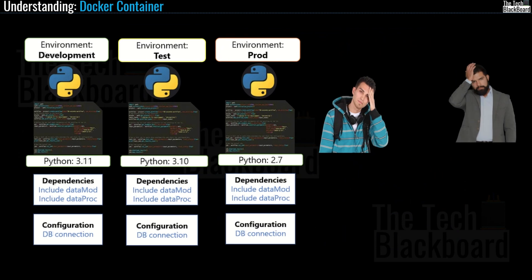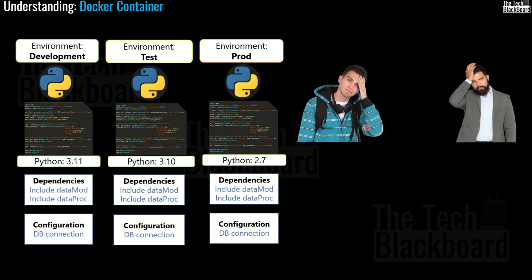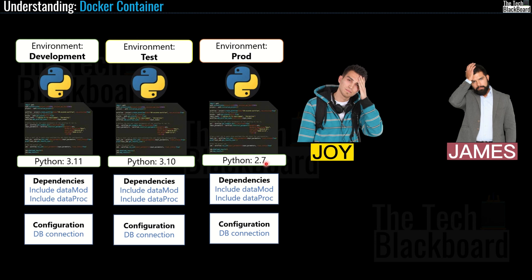This is an age-old fight between the dev team and the operations team. The dev team, represented by Mr. Joy, and the ops team, led by Mr. James, both blame each other. The dev team blames the ops team for not keeping the production environment up to date, and the ops team blames the dev team for not creating backward compatible code. And this fight is not going to settle down anytime soon.